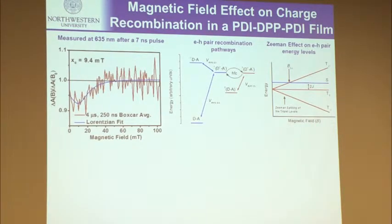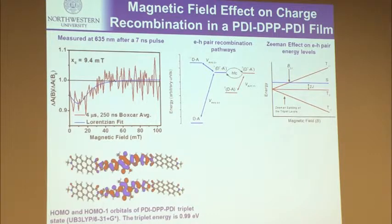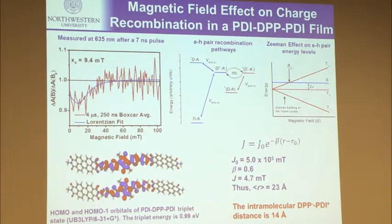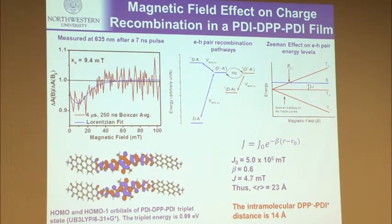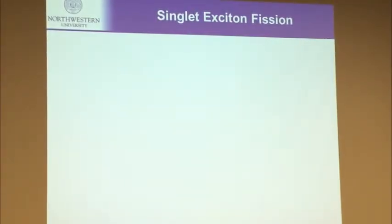Using the magnetic field effect experiment to measure the exchange interaction, we can predict that the average distance between charges is 23 Ångstroms, whereas the intramolecular distance in any one molecule is only 14. Once again, the charges have gotten away from a single molecule and are freely wandering around in the structure. It's the same conclusion as before — ordered assemblies promote charge delocalization and dramatically extend charge separation lifetimes.